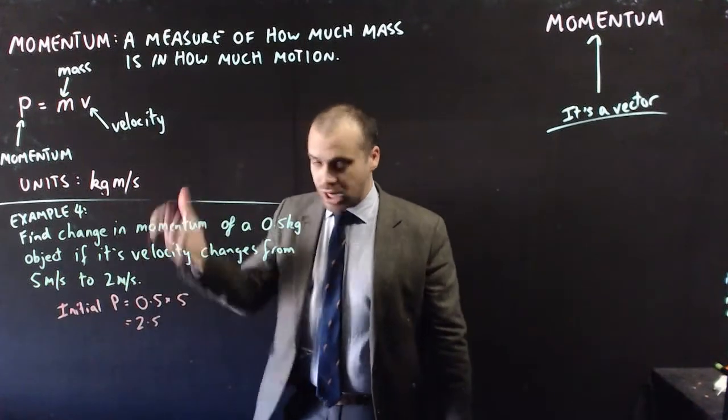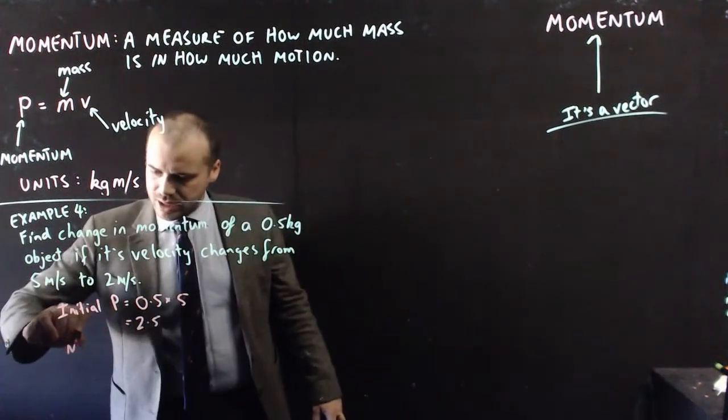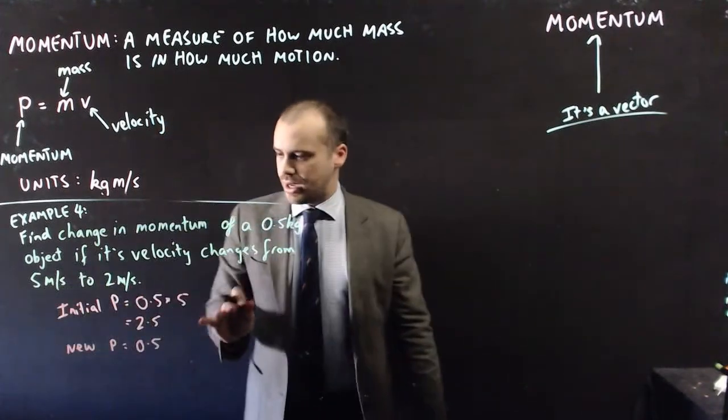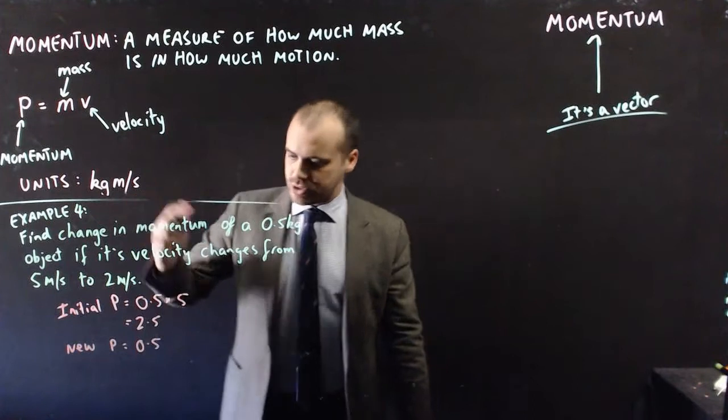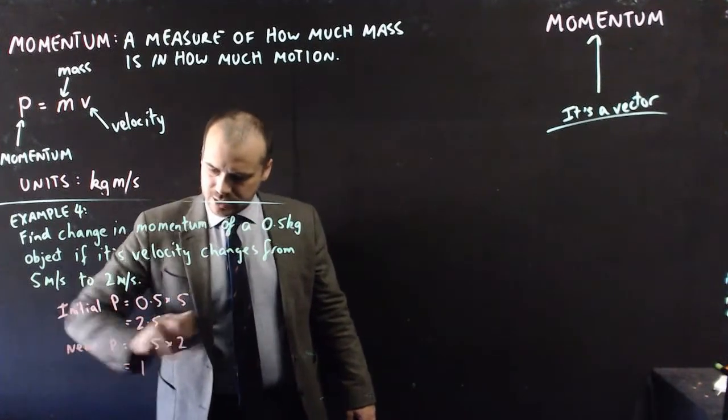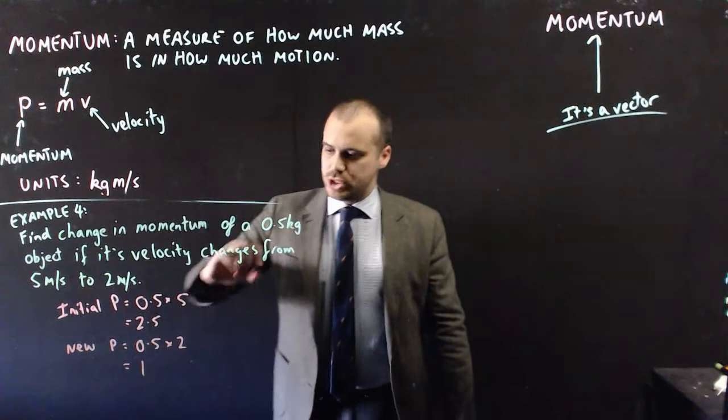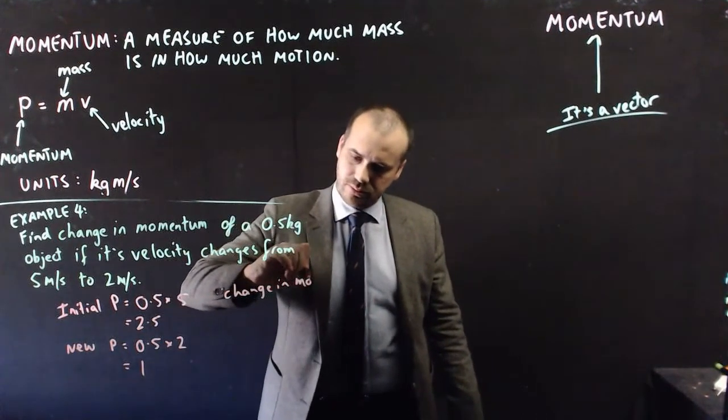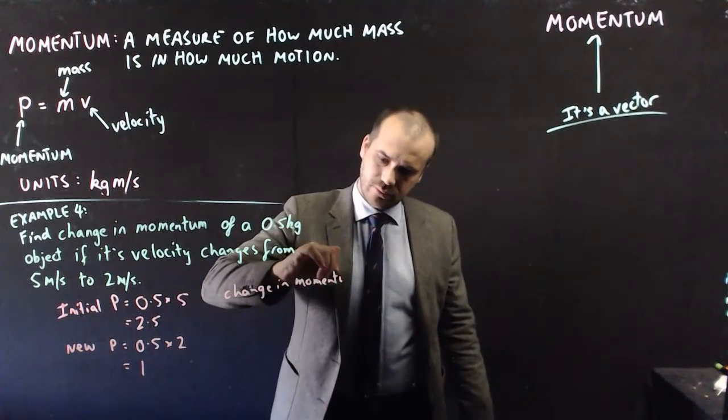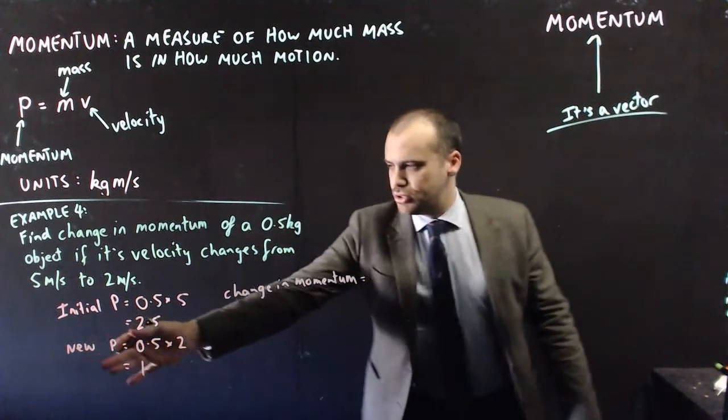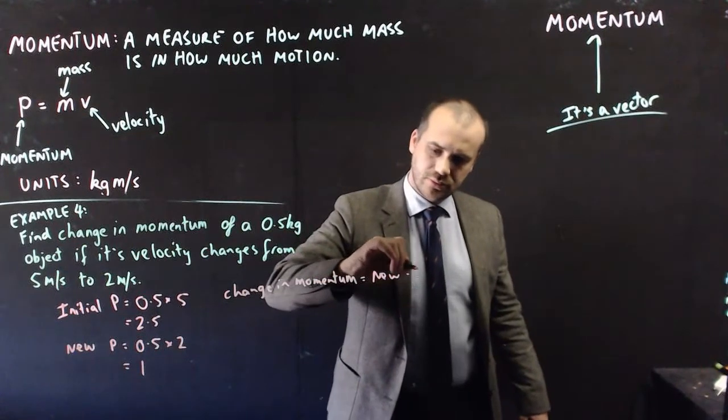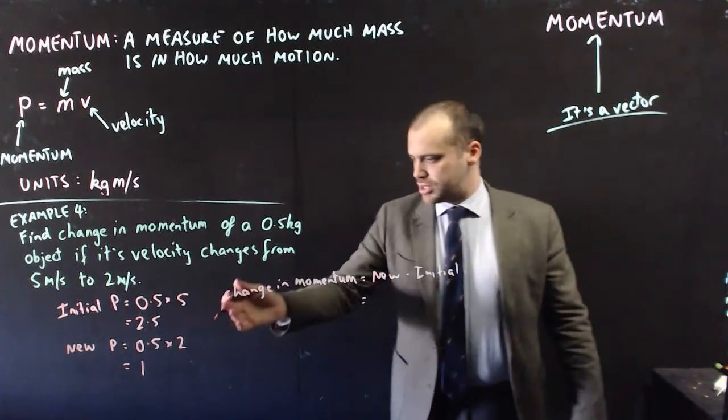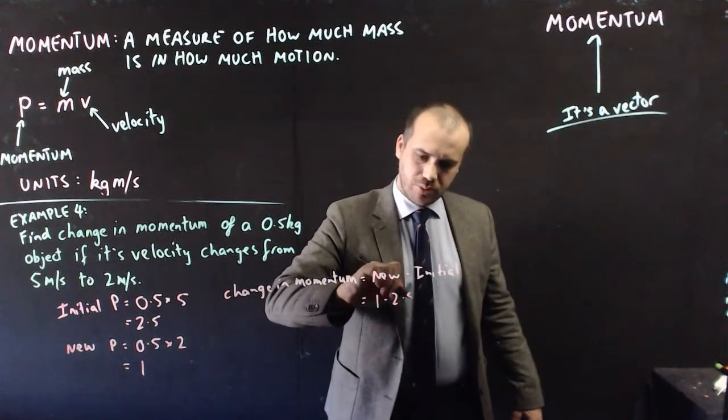Now, its changed P, or its new P, equals still the same weight, but the velocity is changed now: 2. So that's 1, which means that the change in momentum equals the new minus the initial, which is 1 minus 2.5: negative 1.5.